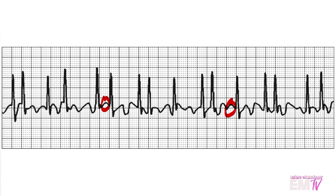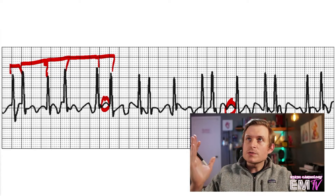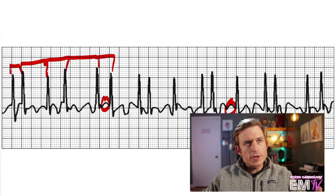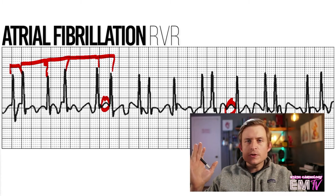Nor is there a consistent PR interval. The next thing I'll look at is the R to R interval. The R to R interval here is very, very irregular — there doesn't seem to be any sort of semblance of a pattern. Anytime I'm given a card where you have an irregularly irregular rhythm, there's only one type of phenomenon that can cause this: fibrillation. But because I have the presence of QRS complexes, this is going to be atrial fibrillation. So I would call this an atrial fibrillation with a rapid ventricular rate, or AFib RVR.